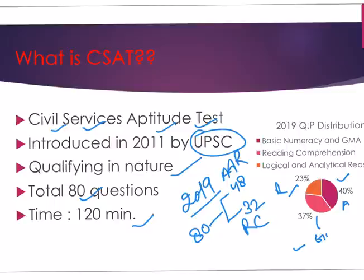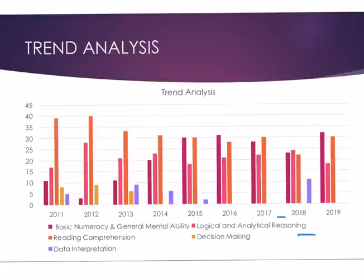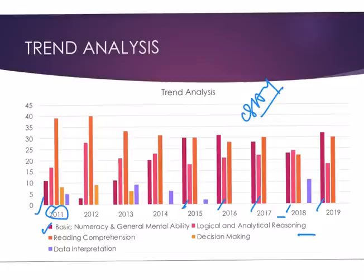By this we can understand the changing trend of UPSC for CSAT paper. We can easily understand that questions from basic numeracy and general mental ability started in 2011 and are increasing every year. The questions from these topics are increasing continuously, and you can also see about reading comprehension, decision making, and data interpretation.